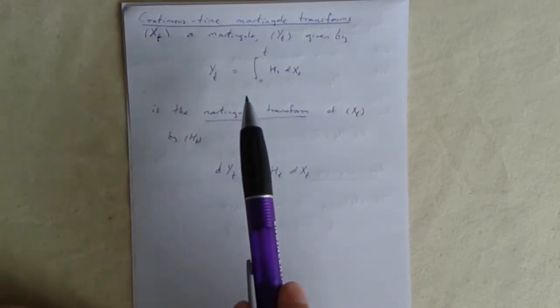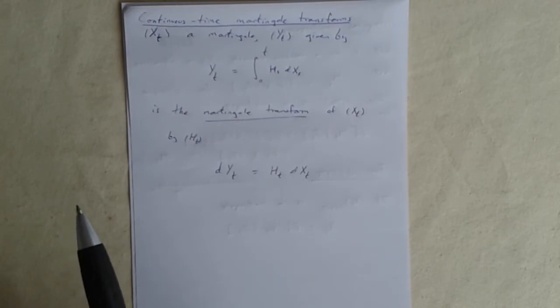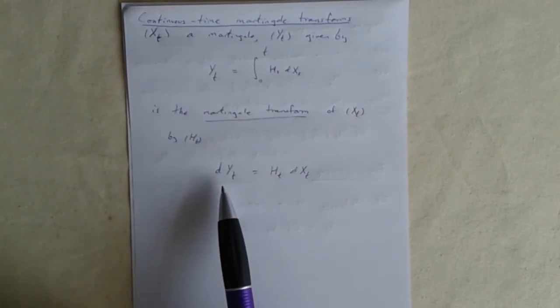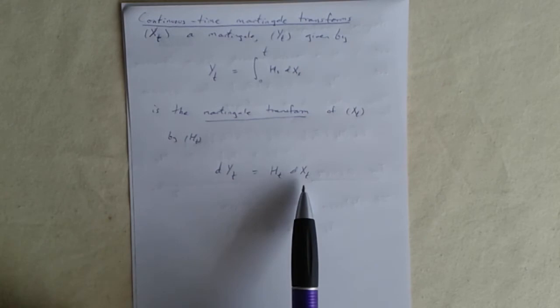That's called a Martingale transform of xt. Perhaps a more illuminating way to write it is like this: in its differential form, dyt is ht dxt.